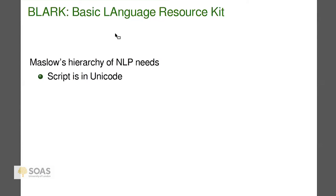Now I'll turn to NLP — natural language processing — the kind of thing that's in your iPhone if you have one. I like to talk about, in a somewhat facetious way, what I call Maslow's hierarchy of NLP needs — referring to Maslow's hierarchy of needs where first you worry about eating, then whether you have a home.